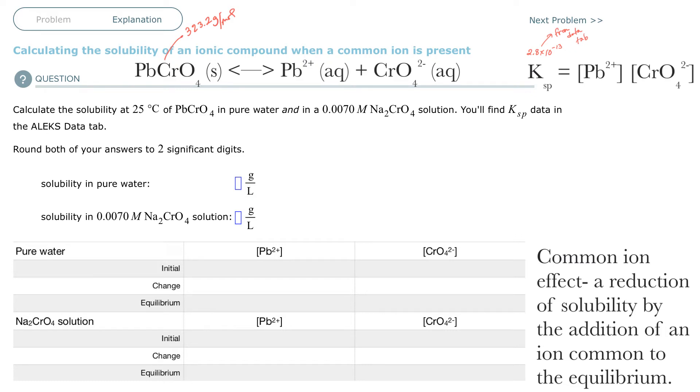Welcome back. This is an ALEKS training video on calculating the solubility of an ionic compound when a common ion is present. The main teaching of this section is on the common ion effect, which I have defined here at the bottom.